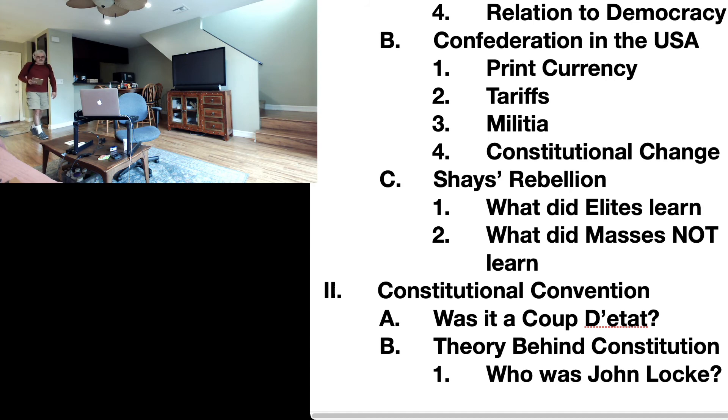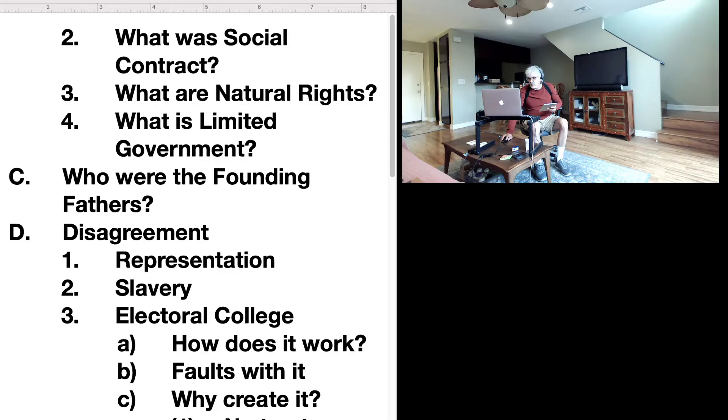So here we go. Find out on your own the following: Number one, who was John Locke? Number two, what was the social contract? Number three, what are natural rights? And number four, what is limited government? So find that on your own. I'm not going to cover it. It's in your book. It will be on your exam.